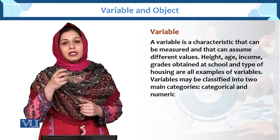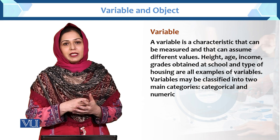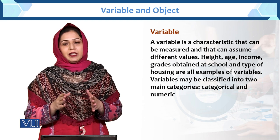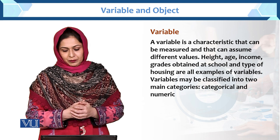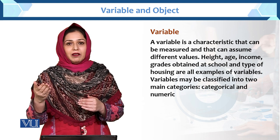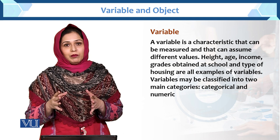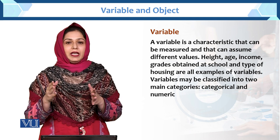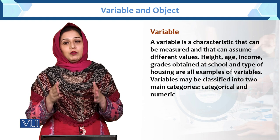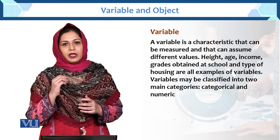Aur jisay hum assume kar sakti hain, uski different values hum de sakti hain. Usko hum measure kar sakti hain, that is called the variable. For example, age. Age vary karti hai, age bhi constant nahin hoti. Income bhi constant nahin hai, income bhi vary kar rahi hai. Jo cheez vary kar rahi hai aur hum use measure kar sakti hain, that is called the variable.